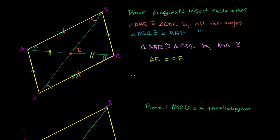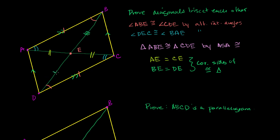By the same exact logic, we know that BE must be equal to DE. They're corresponding sides of two congruent triangles, so they must have the same length. So BE is equal to DE, and we've done our proof. Diagonal DB is splitting AC into two segments of equal length and vice versa — AC is splitting DB into two segments of equal length — so they are bisecting each other.